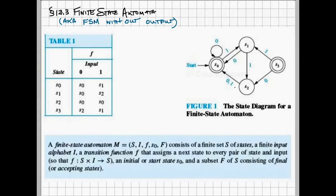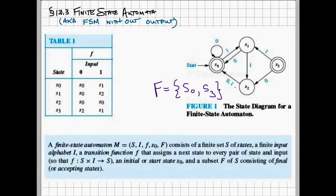Final states are displayed as double circles in our state diagram. So in the diagram given here, there are two final states. And so we can say that the set F is state 0 and state 3.